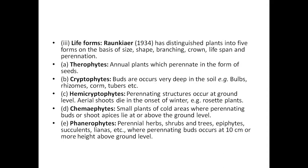Hemicryptophytes have a perennation structure where the vegetative propagated structures are aerial shoots. These are rosette plants. Examples include Echinoria and Pistia.